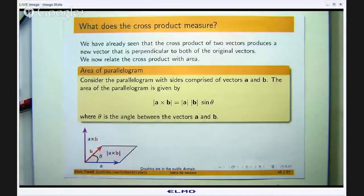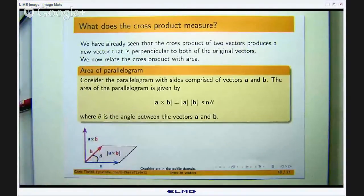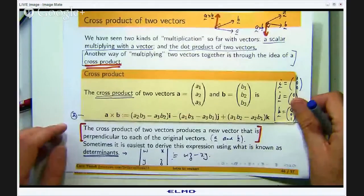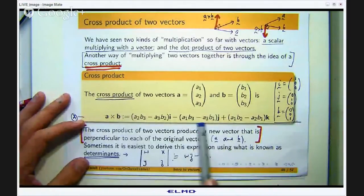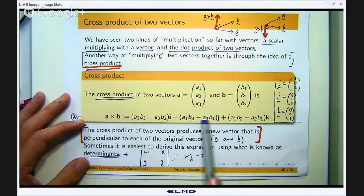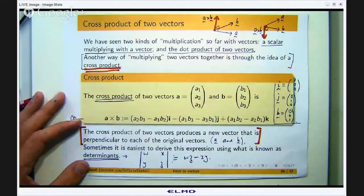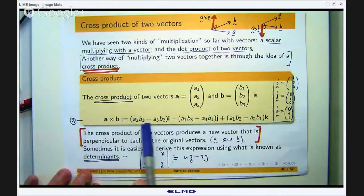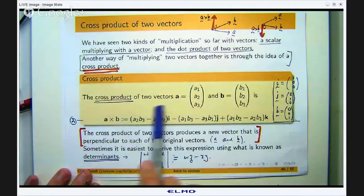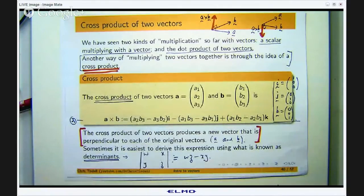Okay so today's presentation is what does the cross product measure. So let us just refresh our memories on what the cross product is. If I have got two vectors say a and b then the cross product is defined to be this big mess here where the i, j, k vectors are the usual basis vectors in three dimensional space. Now in the previous video I showed you a method of computing this cross product using determinants.